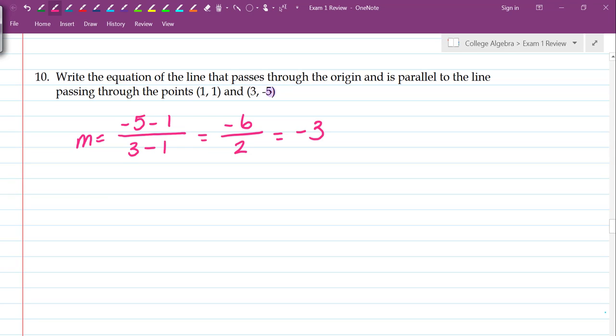Now, what the question is, is it says I want an equation of a line that passes through the origin and is parallel. The key part of the fact that passes through the origin, that is a point. The coordinates of the point is 0, 0.